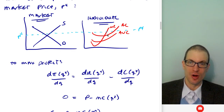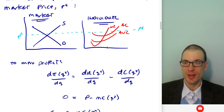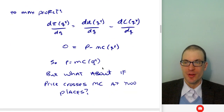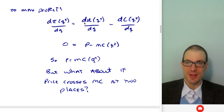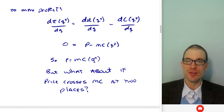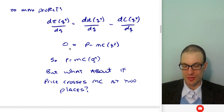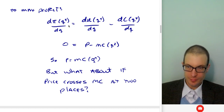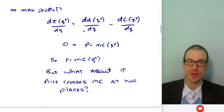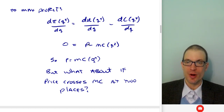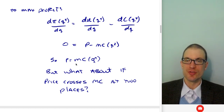To maximize profit, we take dπ/dq, which gives us dr/dq minus dc/dq. For the competitive market, we set the derivative equal to zero. Since marginal revenue is just the market price for a competitive firm, this gives us the outcome: price equals marginal cost.